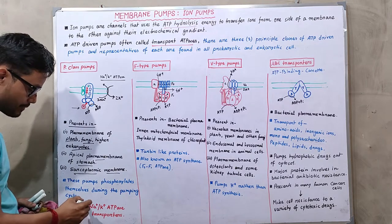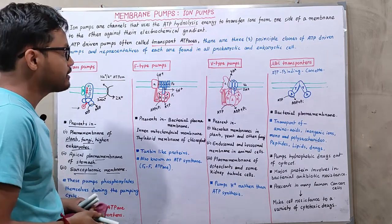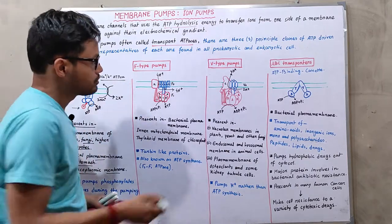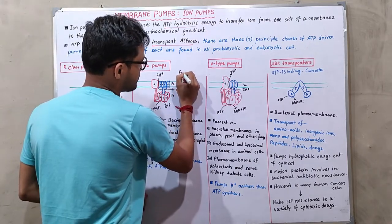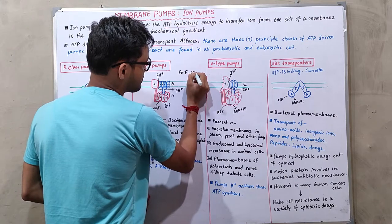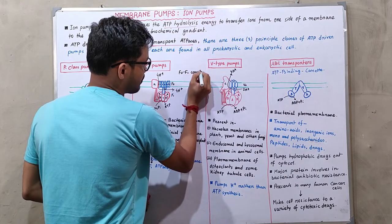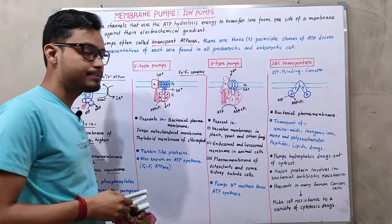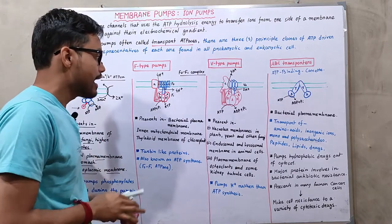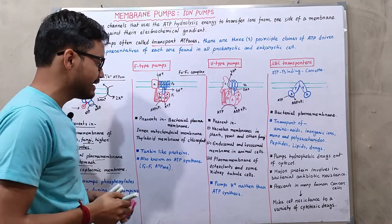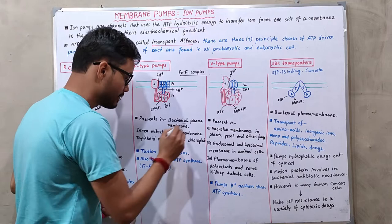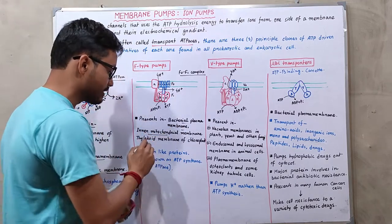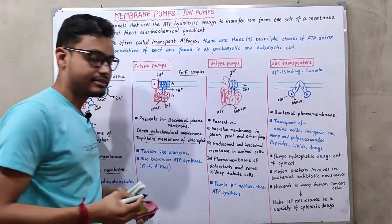Another type is the F-type pump, also known as the F0F1 complex or F0F1 ATP synthase. Unlike P-type pumps, F-type pumps generate ATP. They are present in the bacterial plasma membrane, the inner mitochondrial membrane of eukaryotes, and the thylakoid membrane of plant chloroplasts.